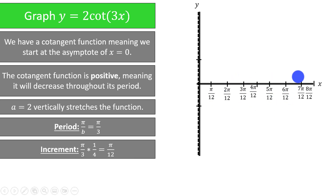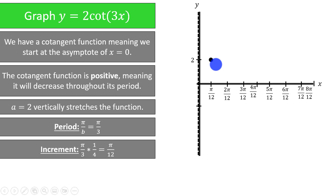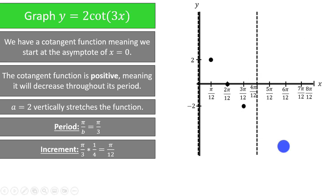Continuing: 6pi over 12, 7pi over 12, and 8pi over 12. This is a positive cotangent function, meaning it will decrease throughout its period. So we will come down from positive infinity and then have the point pi over 12 equal to 2. At 2pi over 12, we will have 0. At 3pi over 12, we will be at negative 2. Then we will have another asymptote. The pattern repeats for the next period: at 5pi over 12 we are at 2, at 6pi over 12 we are at 0, at 7pi over 12 we are at negative 2, and at 8pi over 12 we have another asymptote.